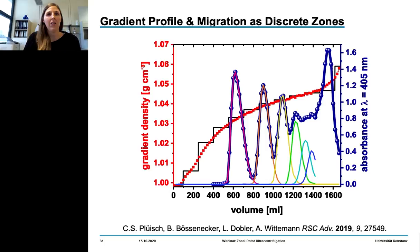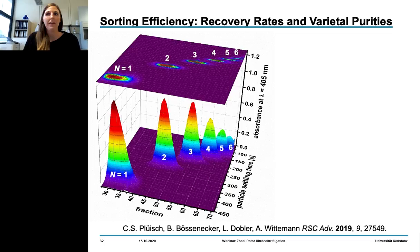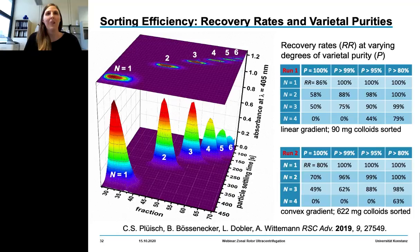Since we know the composition of all fractions, we can also experimentally deconvolute the absorption pattern into contributions of single particle populations. Together with this, we can set up a full separation map and optimize the gradient profile for different sets of particles.